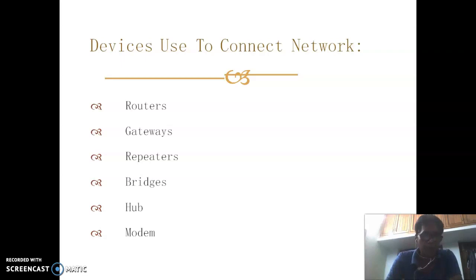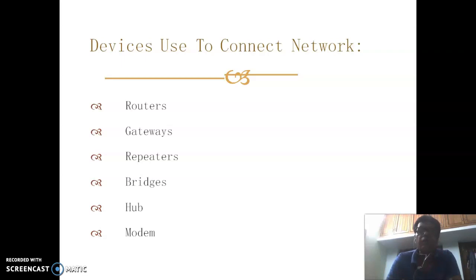A router is a device which provides routes or paths through which a message travels from source to the destination. A gateway is a checkpoint that verifies the incoming message and then transports it to the concerned network for delivery.